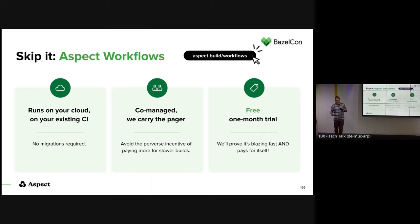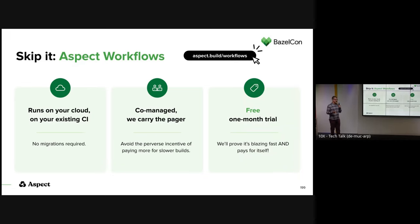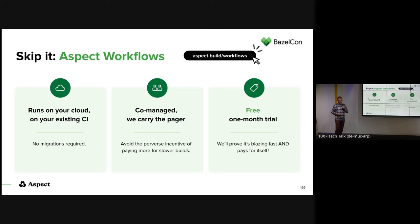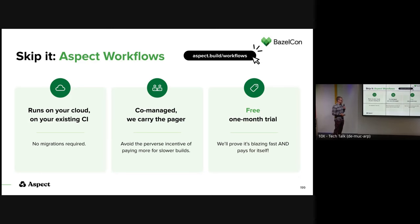This being the product talk, we have a solution for this. We've deployed this at 15 companies now. It's called Aspect Workflows, and the idea is that it runs on your cloud and on your CI — we're not asking you to migrate anything. It is co-managed: we carry a pager, and we don't make money if your builds are slower, so we want to make your builds faster instead. We offer a one-month trial, and this is generally the point where we're able to prove that not only does it make your builds faster, but it actually pays for itself. We always help our customers calculate the savings they're getting on their cloud machines and don't expect them to proceed unless we're able to save money overall.